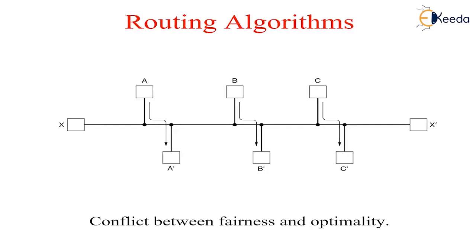Routing algorithms can be grouped into two major classes: non-adaptive and adaptive. Non-adaptive algorithms do not base their routing decisions on measurements or estimates of the current traffic and topology. Instead, the choice of the route to use to go from I to J is computed in advance, that is offline, and downloaded to the routers when the network is booted. This procedure is sometimes called static routing.